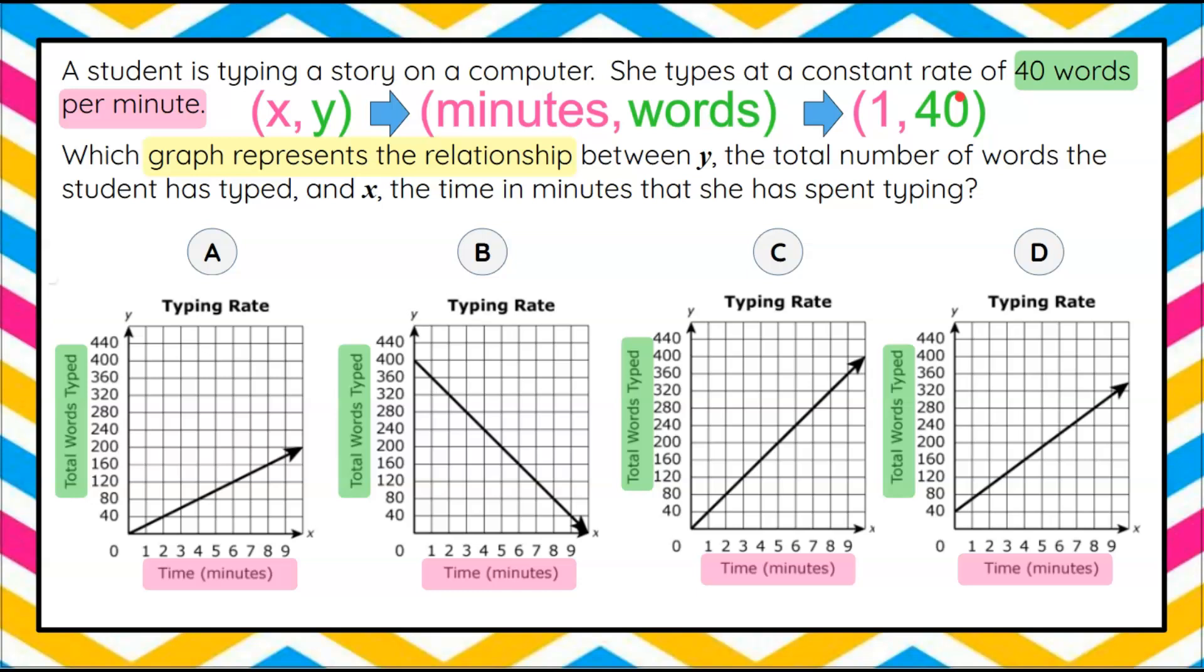So now we just need to go and look at our four graphs and see which graph has 1, 40 on the line. So we're going to start here. 1, 40 has a point right there that is above the line. So I'm going to eliminate choice A.